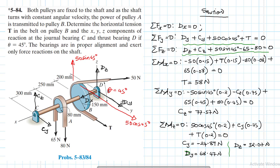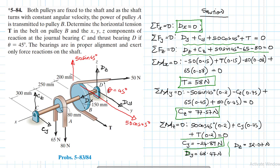We have now found all the unknowns: T, Dx equals zero, Cy, Cz, Dy, and Dz. I hope this video was helpful. If it was, please give it a thumbs up, like and share the video. Bye-bye and see you in the next screencast.